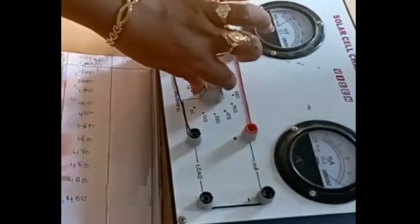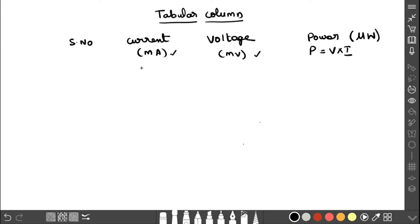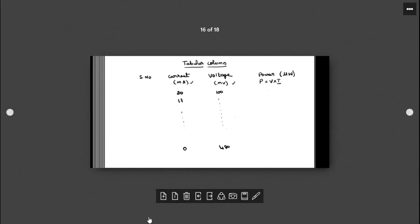Finally we reach 1k ohm, which is equivalent to the open circuit. So we take values from short circuit all the way to 1k ohm. After finishing the experiment, current starts from 20 and decreases to 0, while voltage starts from 100 and increases up to 480 millivolt. By multiplying current and voltage we get the power values to record in the tabular column.